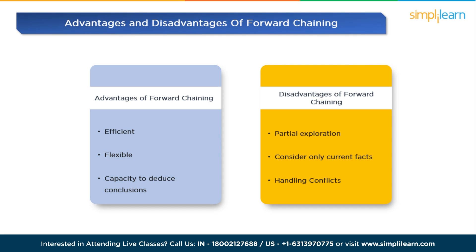Advantages of forward chaining: forward chaining demonstrates efficiency by leveraging existing facts or conditions to achieve solutions, potentially resulting in time and computational resource savings compared to alternative methods. Its flexibility shines through its adaptiveness at tackling various problem types and its simplicity of adaptation for differing goals. Furthermore, due to its capacity to swiftly deduce conclusions from a given set of facts or conditions, forward chaining is particularly suitable for real-time decision-making situations.